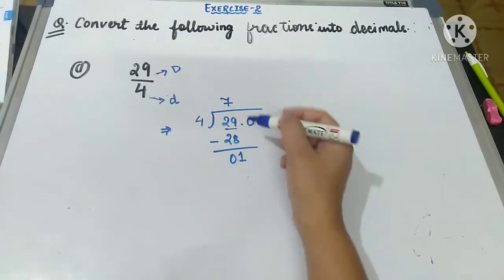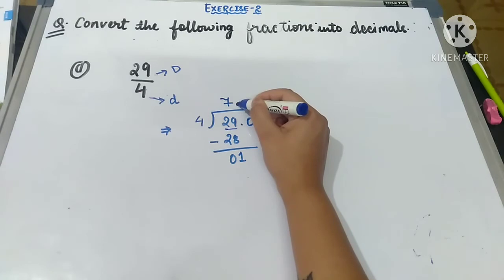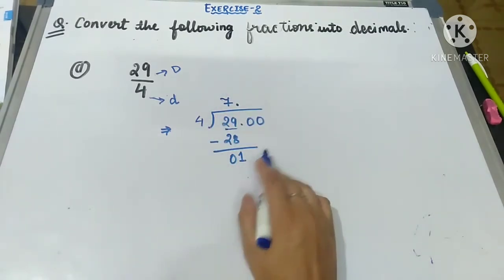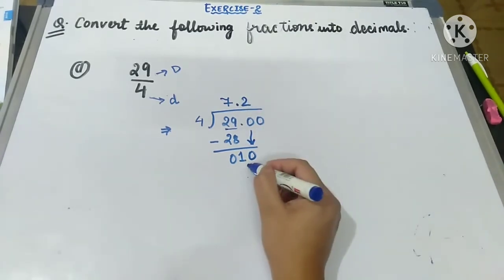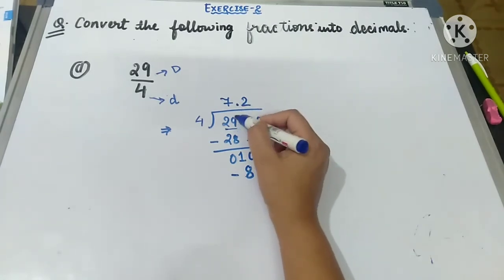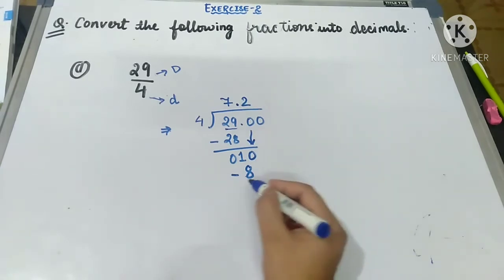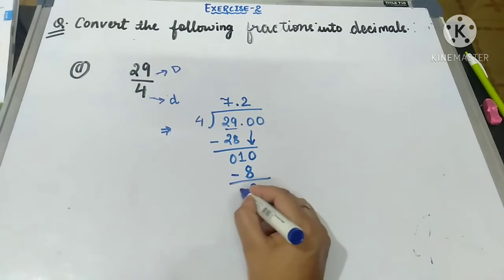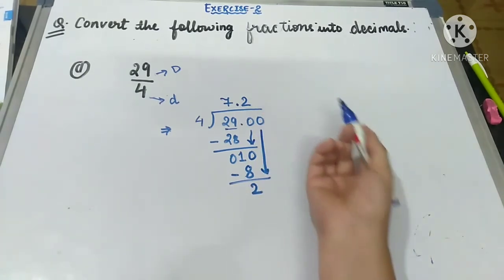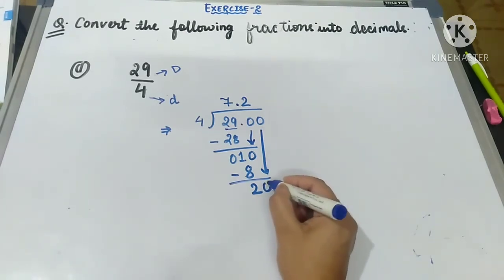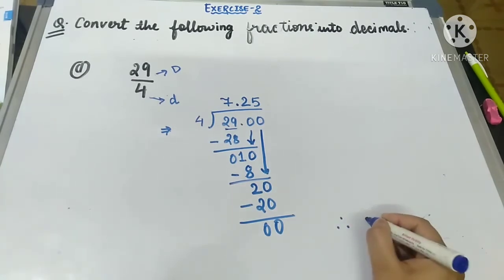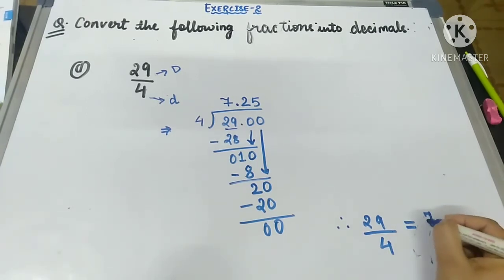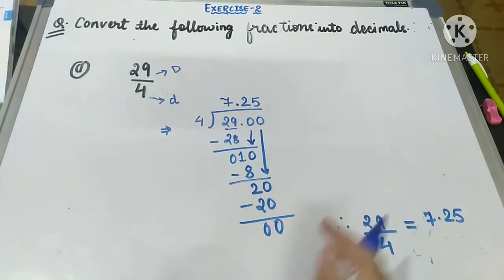After dividing the whole number part, we place a decimal point in the quotient. Bring down the first zero: we have 10, and 4 × 2 = 8, so 10 − 8 = 2, quotient digit 2. Bring down the next zero: 20, and 4 × 5 = 20, remainder 0. So 29 ÷ 4 = 7.25. Since it is completely divided, 7.25 is the required decimal.